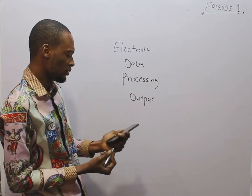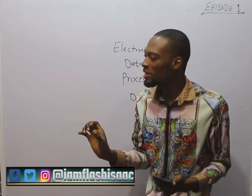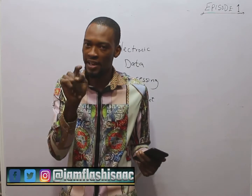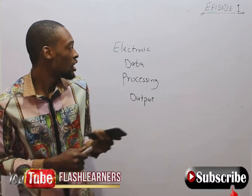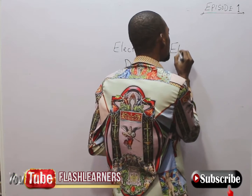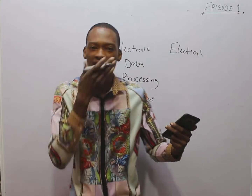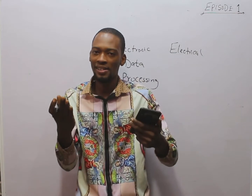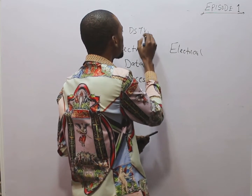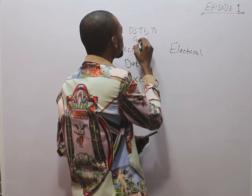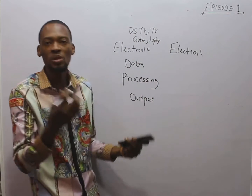Now, look at this. A computer is an electronic device, which means it is not an electrical device. In computer or in electrical engineering, you have electronic devices and you have electrical devices. Electronic devices are devices that use low power. Examples: your DSTV, your TV, your GoTV, computer, laptop — they are electronic devices. They use low power.